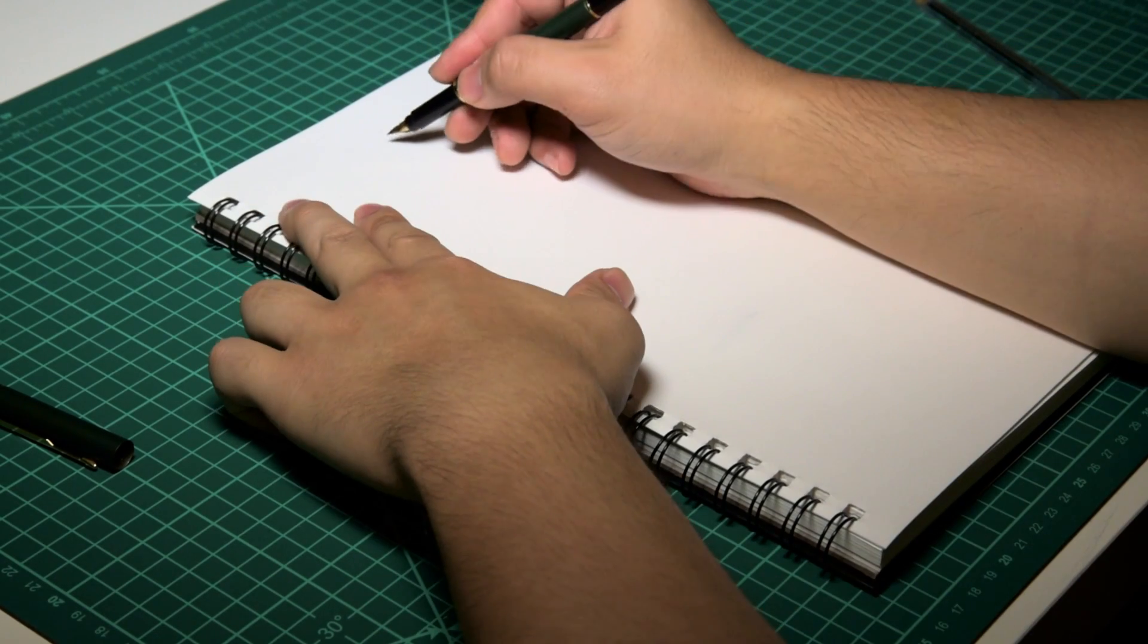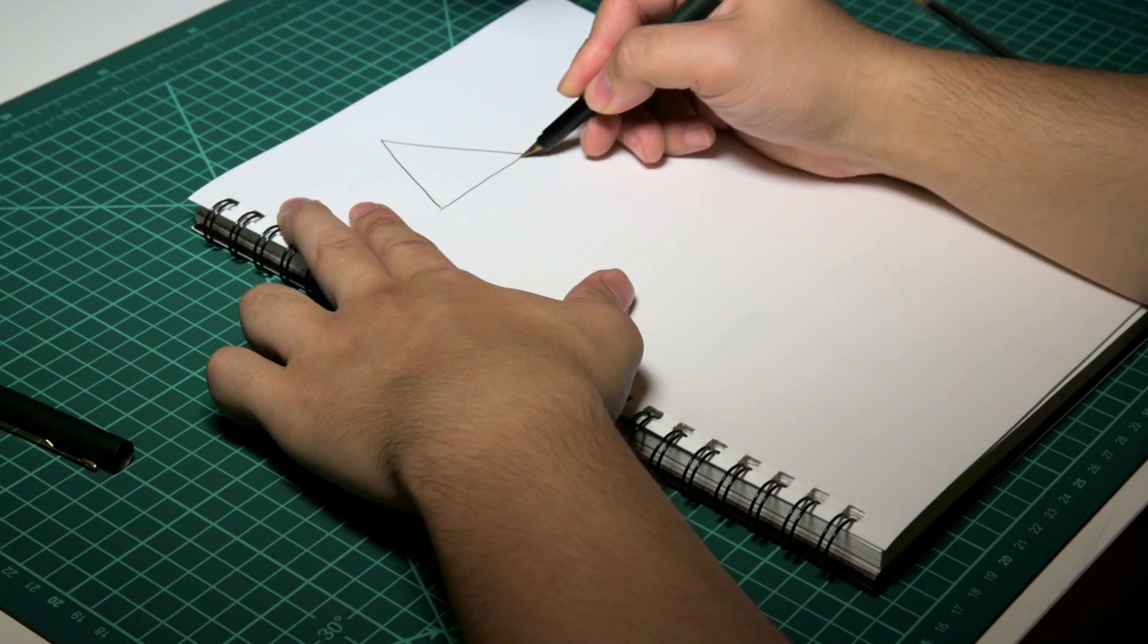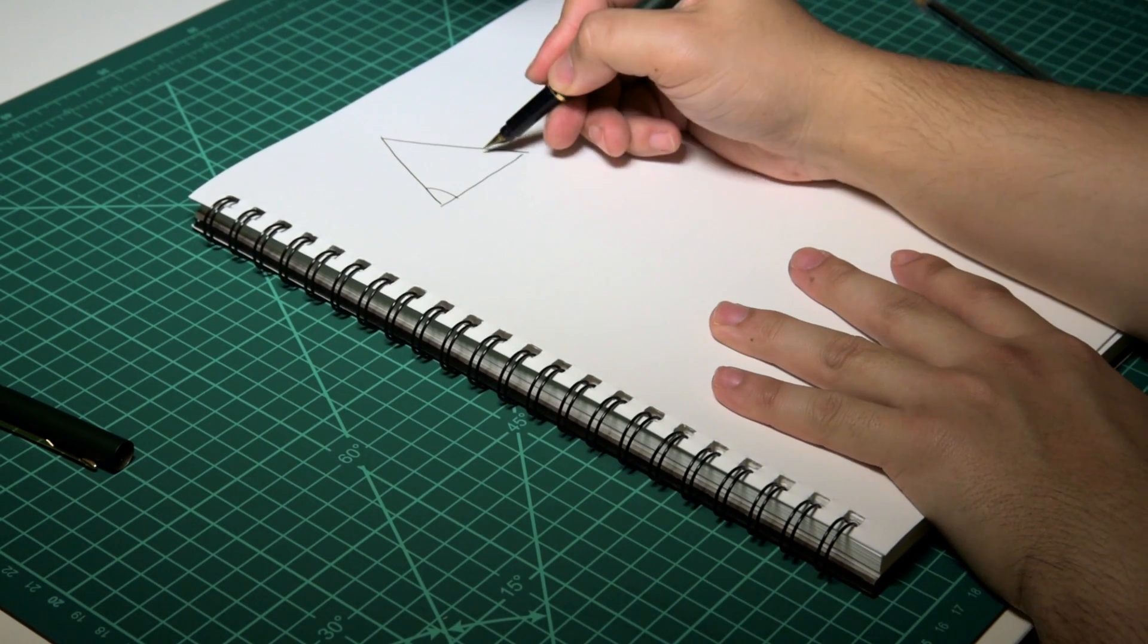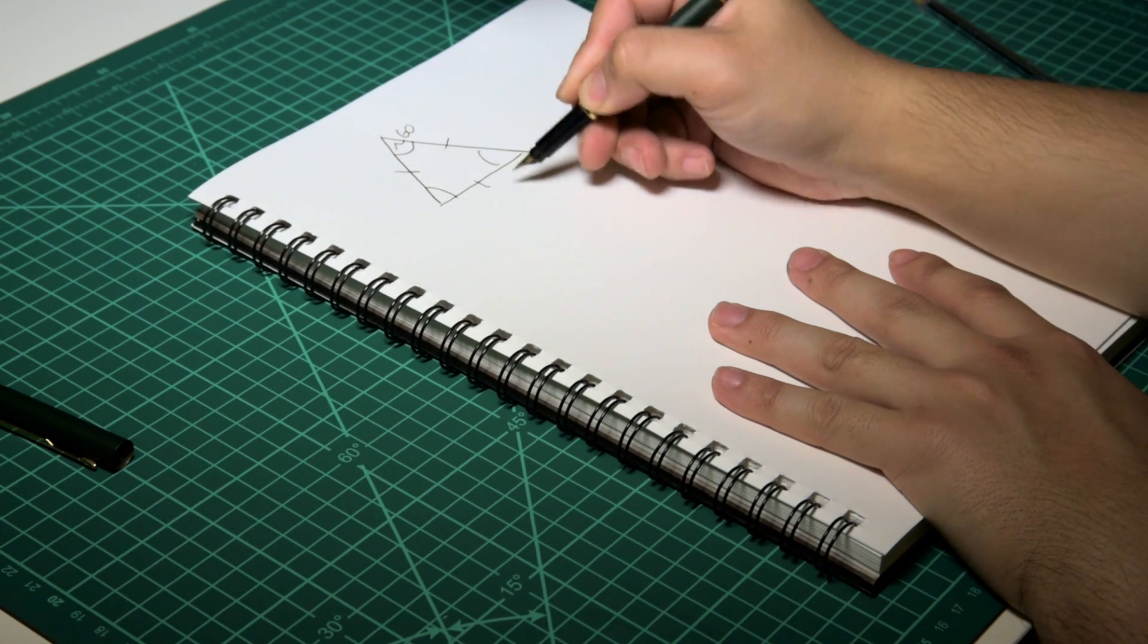Exact triangles. To start this we'll draw an equilateral triangle with angles of 60 degrees and sides of two.